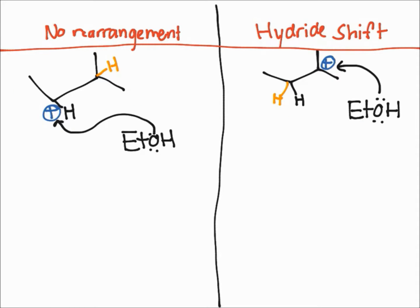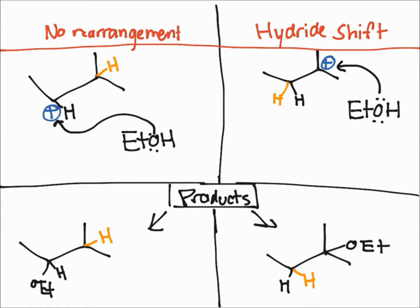Here I've drawn the secondary carbocation, which is the product formed without rearrangement or a hydride shift. On the right, I've drawn the product formed after the hydride shift — the tertiary carbocation. These produce two different products. After the EtOH attacks and the extra proton gets deprotonated, the alcohol group is added onto two different carbons, giving two different types of products.